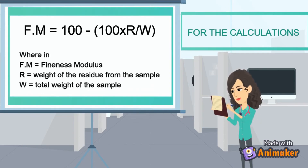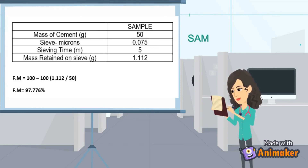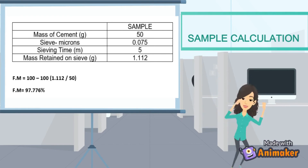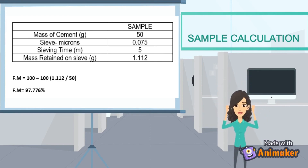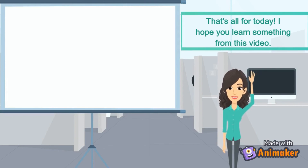For the calculations: Fm is equal to 100 minus 100 times R all over W. Here is a sample calculation. That's all for today — I hope you learned something from this video.